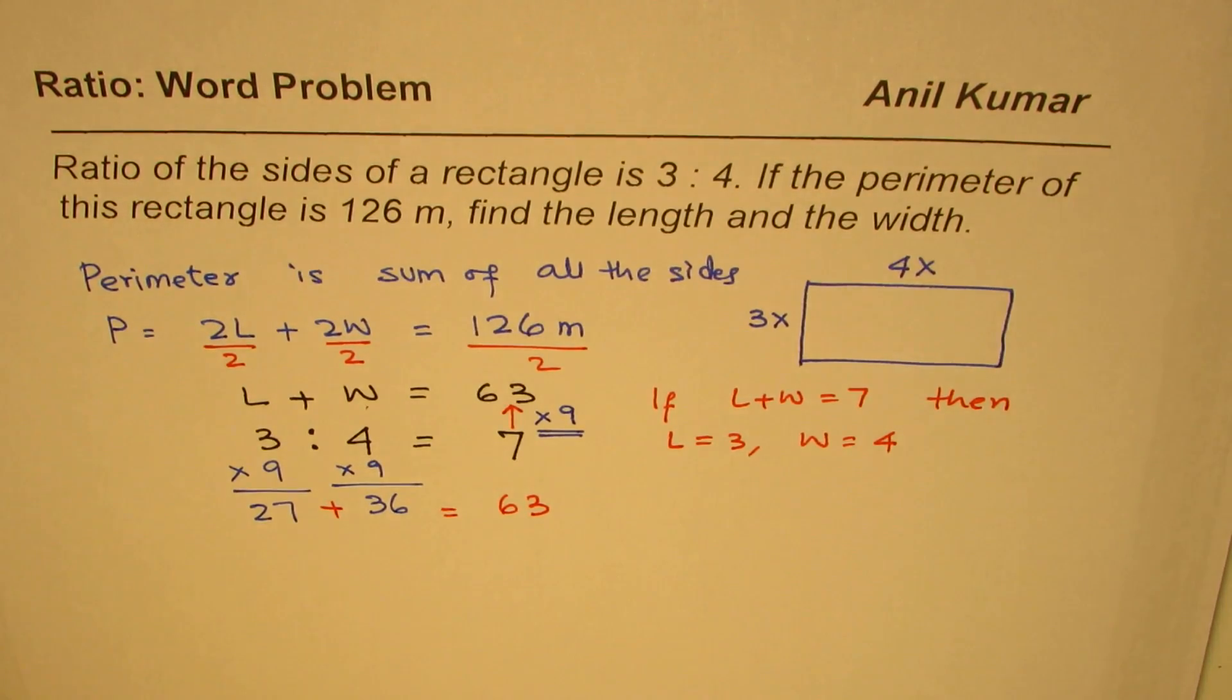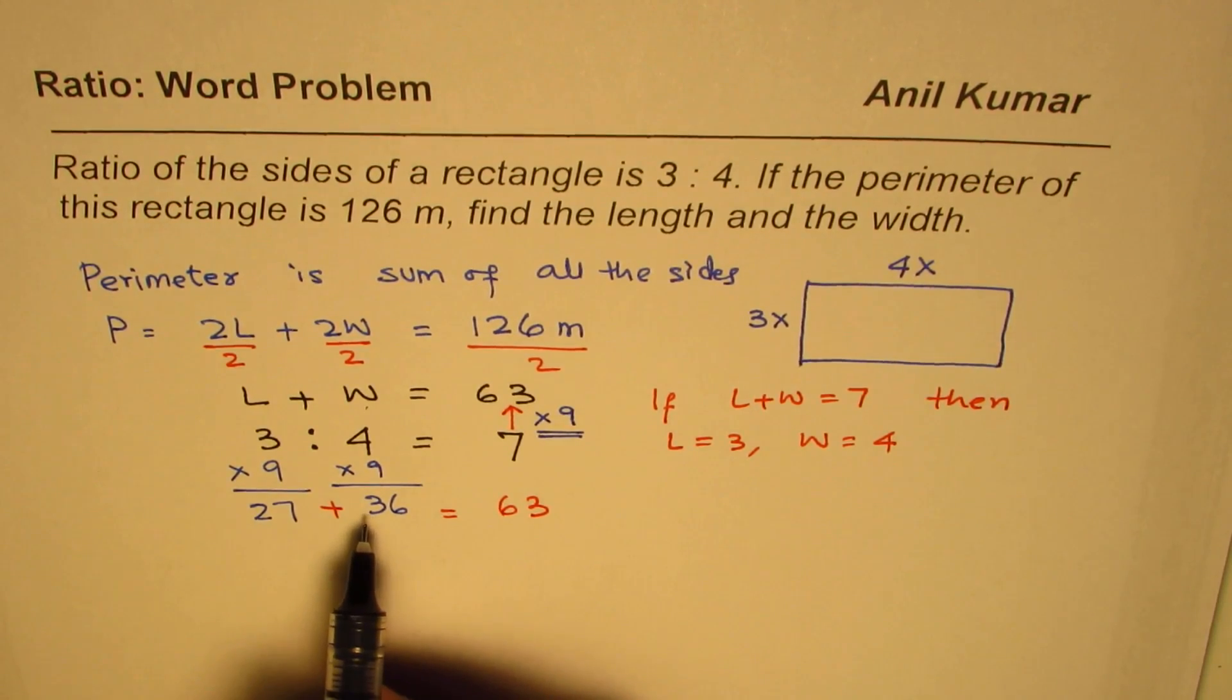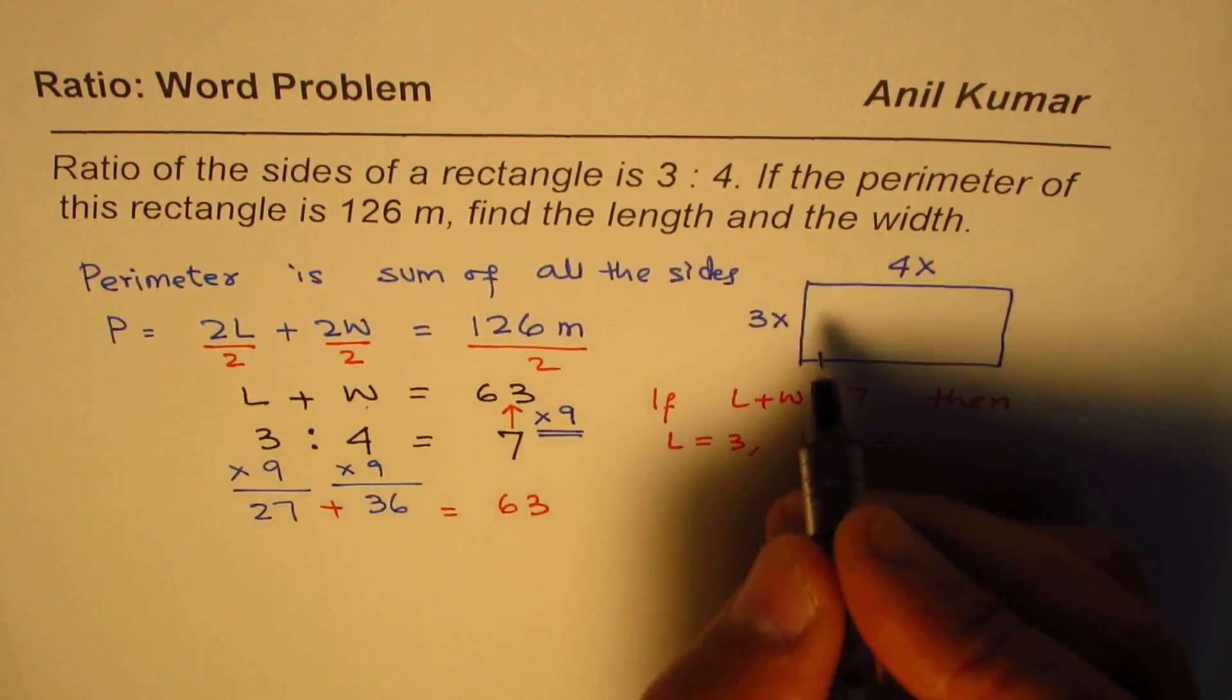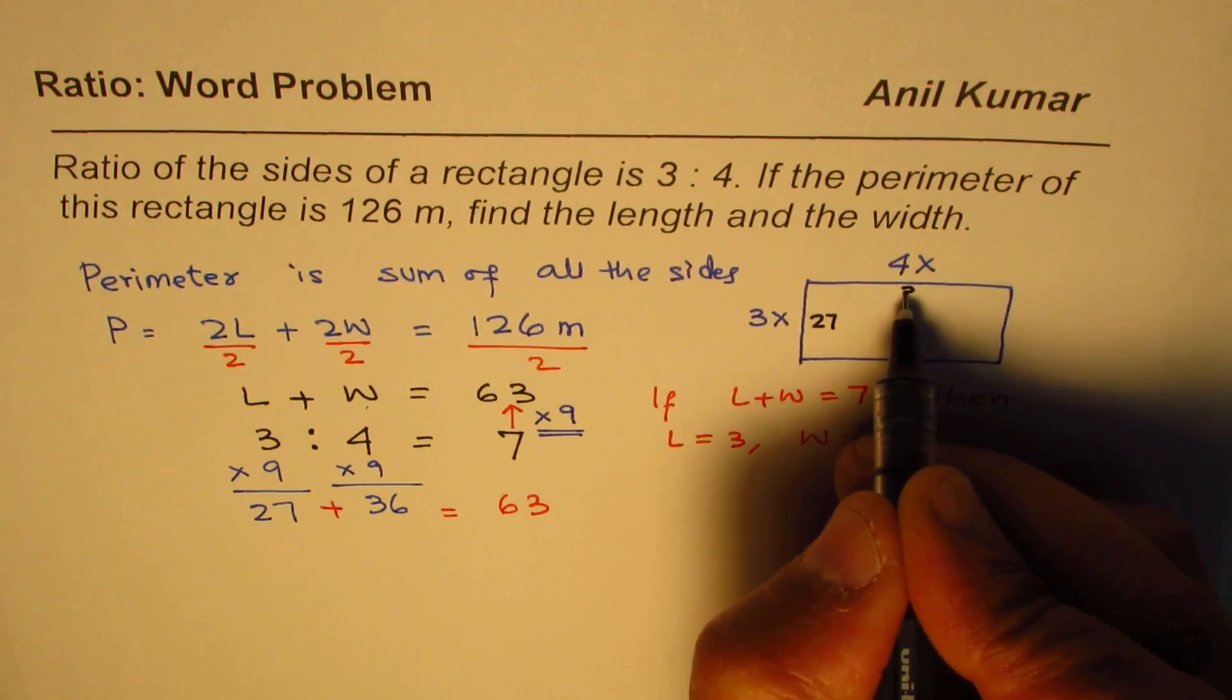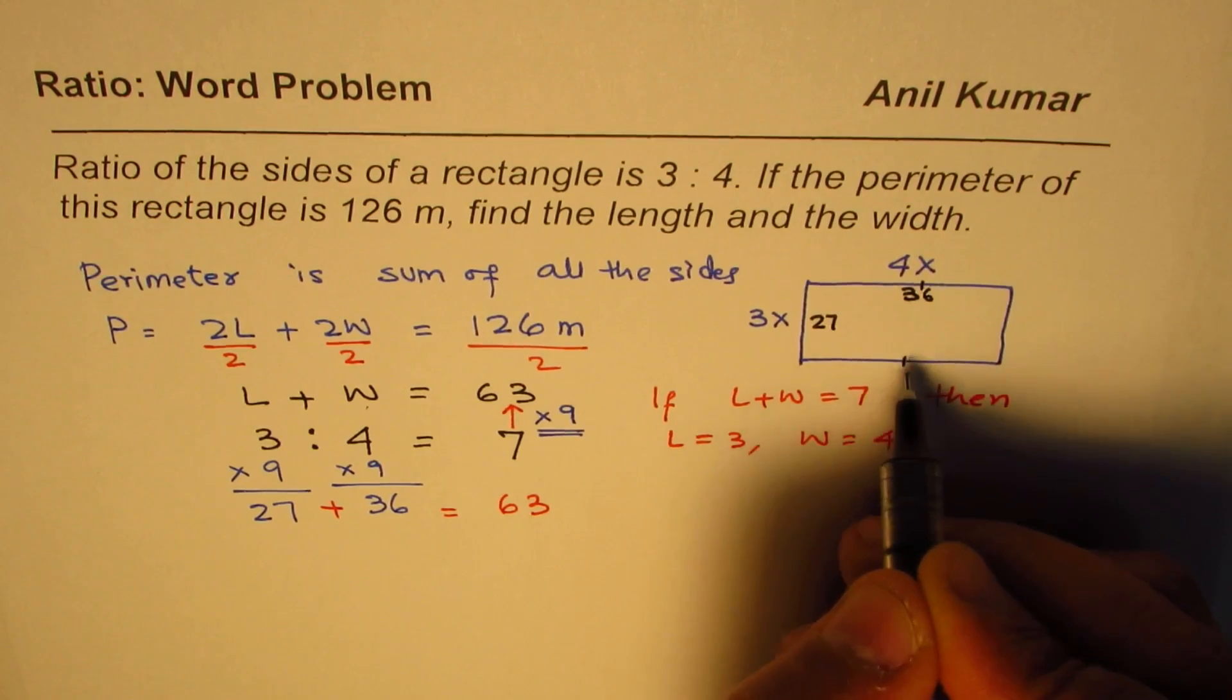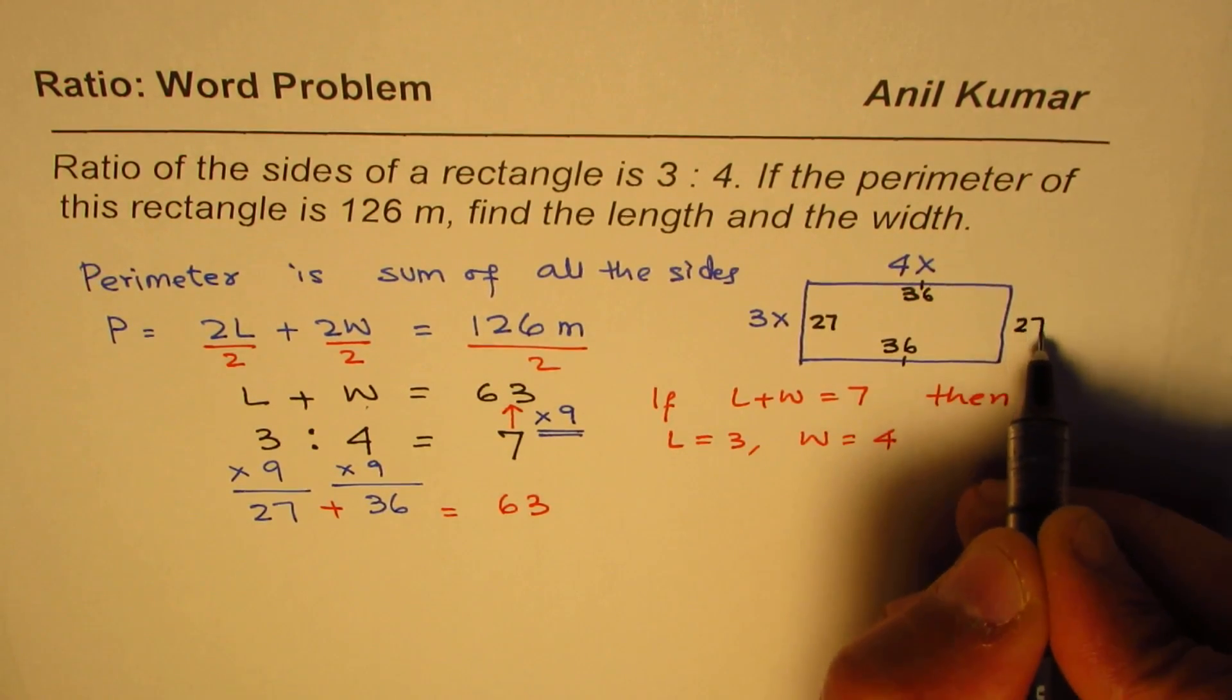So solving this, what we found in our case, that length and width are 27 and 36. So we are saying 3x rather. So we are saying this is 27 and this side is 36. Now, opposite sides are equal.